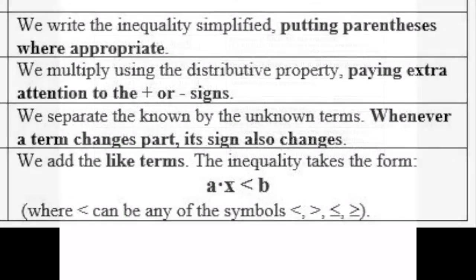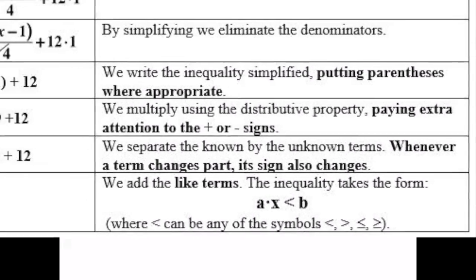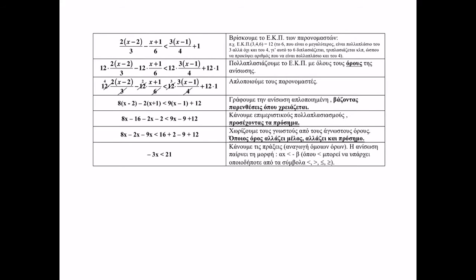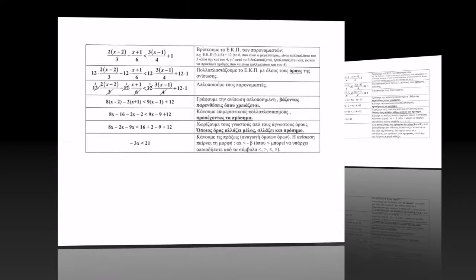We add like terms in both parts. We think 8 minus 2 minus 9 times x equals minus 3x in the first part, then the less than sign, and then 16 plus 2 plus 12 equals 30 and finally 30 minus 9 equals 21 in the second part.